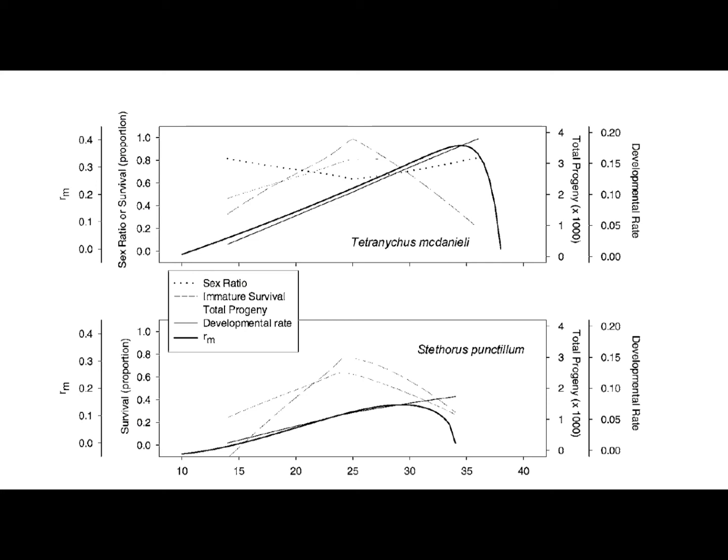According to another paper, Stethorus are much more active at the 25 to 30 degrees celsius range. Their movements are encouraged on flat leaf planes over those with more variants, and trichome presence impeded seeking behavior.